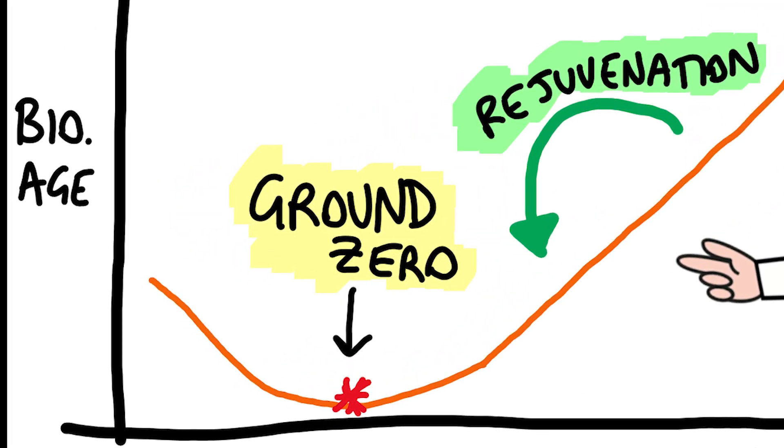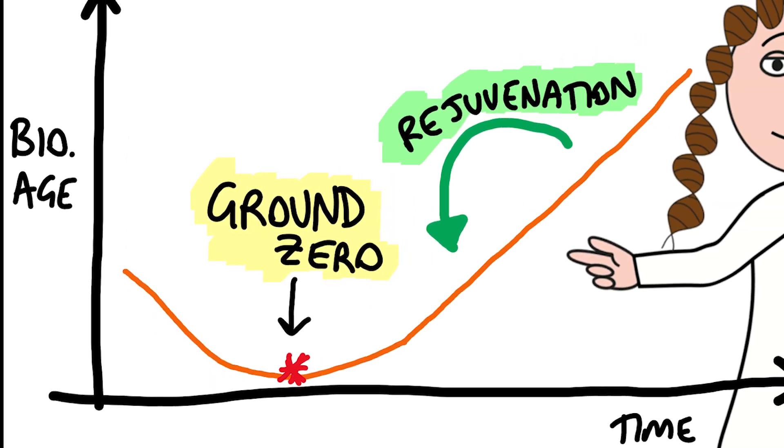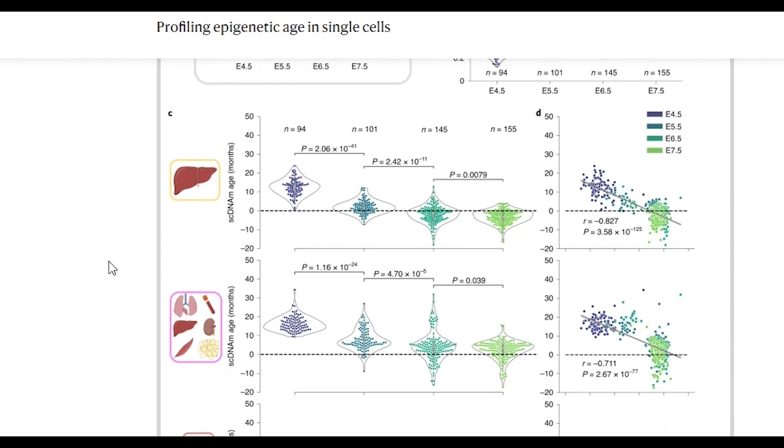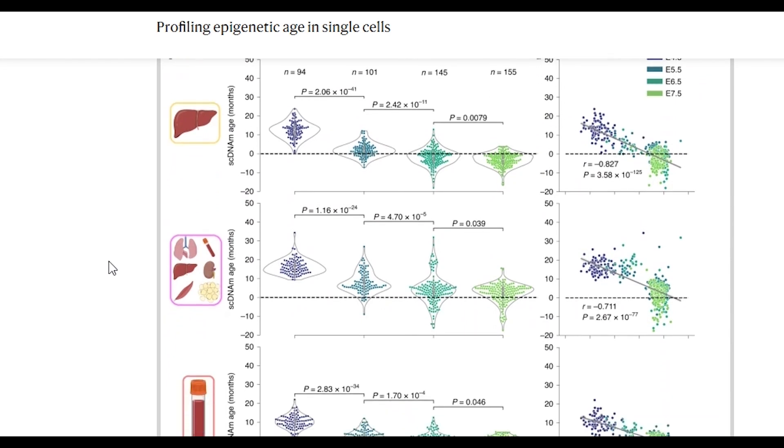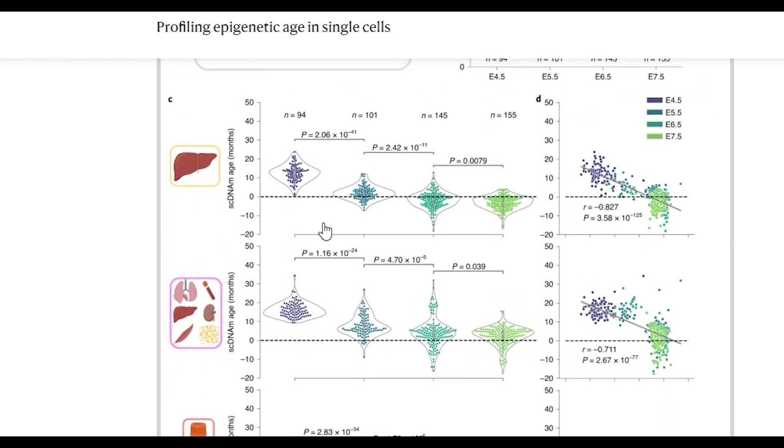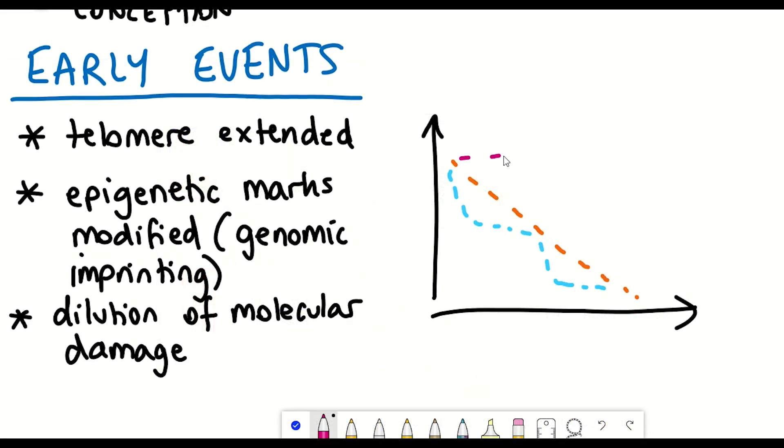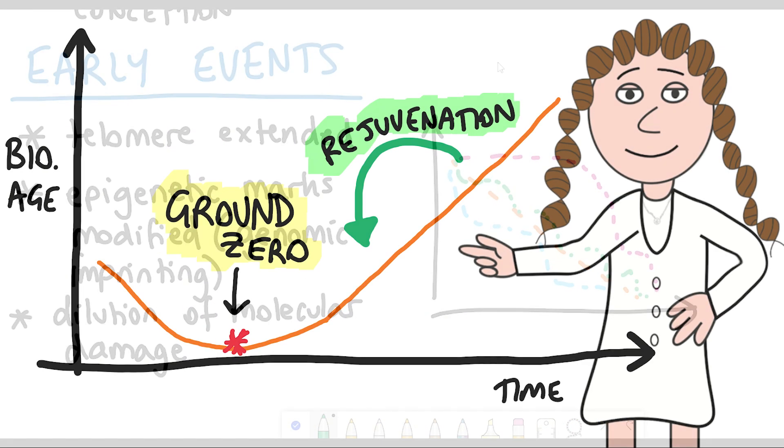And the reason why this was of interest is because early embryogenesis has been suggested to be associated with an initial decrease in biological age to a point termed ground zero after which all organismal aging formally begins. And so if you look at this figure here what you can see is that going from day 4.5 to 7.5 they see a steady and significant reduction in the predicted age and so this is consistent with the notion of a rejuvenation event happening in early embryogenesis.